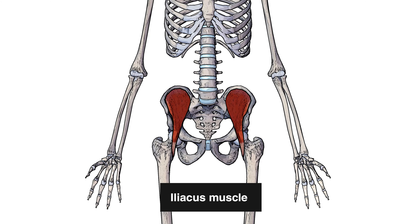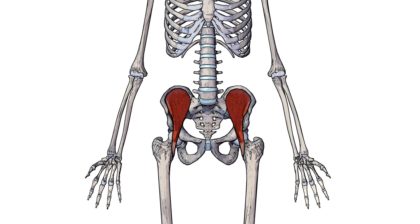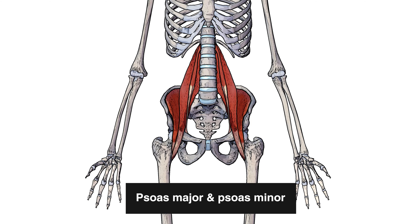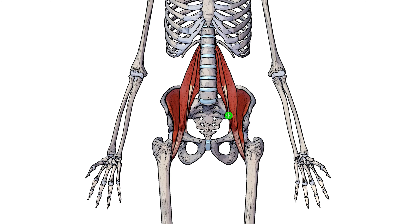The iliacus muscle is one of the three iliopsoas muscles. The other two are the psoas major and the psoas minor. I've just brought the psoas major and minor into view. The psoas major is the largest muscle and the psoas minor is the smaller one. The psoas minor is more superficial than the major, meaning it's closer to the skin surface.